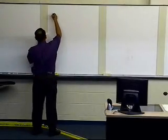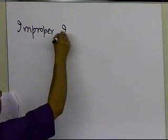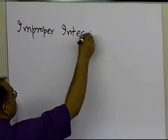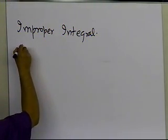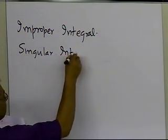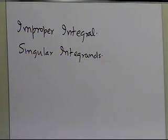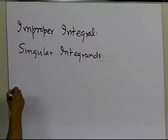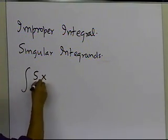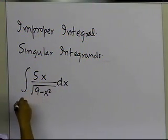In this segment, we're going to take an example of improper integrals, and we're going to talk about an integrand where we have singular integrands. We are only talking about integrals which have a finite value — ones which can be solved and found with a finite value. An example of that is given as follows: 5x divided by the square root of 9 minus x squared, dx, from 0 to 3.